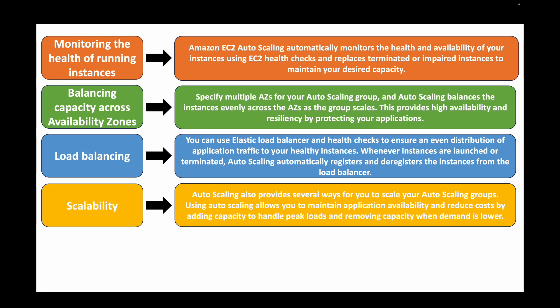The next feature is scalability — the whole point of auto scaling is scaling up and scaling down EC2 instances. Auto scaling group provides several ways to scale: fixed capacity or dynamic auto scaling, which helps maintain availability of your infrastructure while also reducing unnecessary cost. For example, if your application only needs three instances, auto scaling will ensure it runs only three, lowering your overall billing.